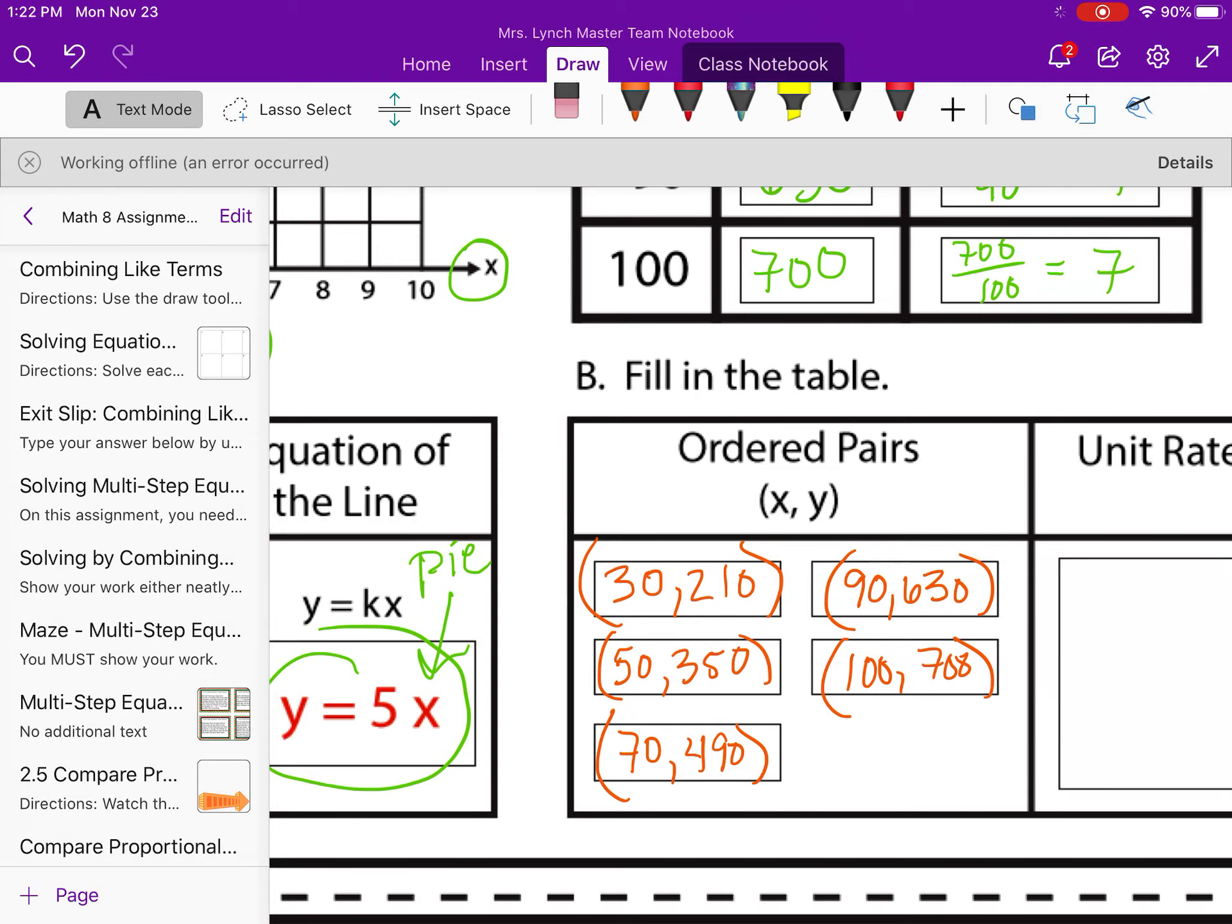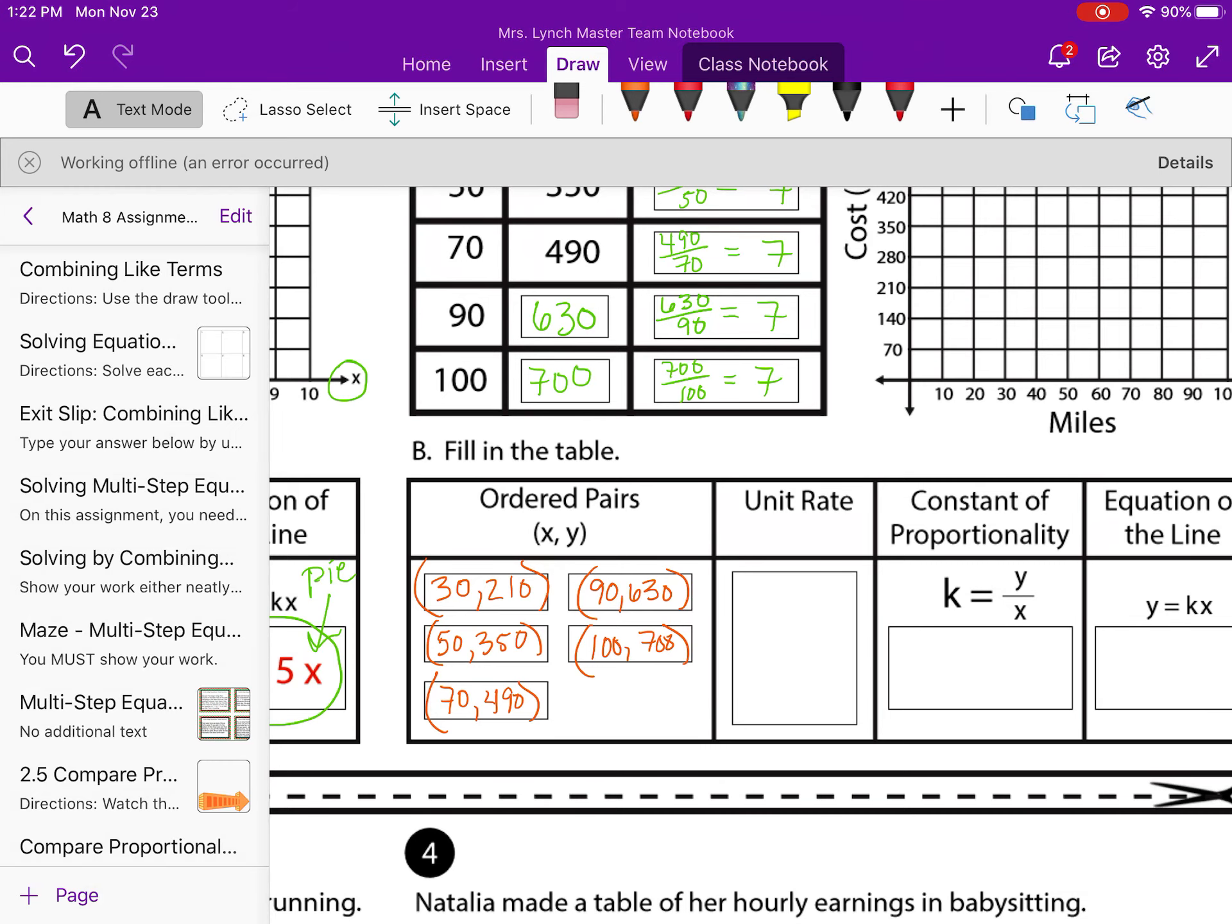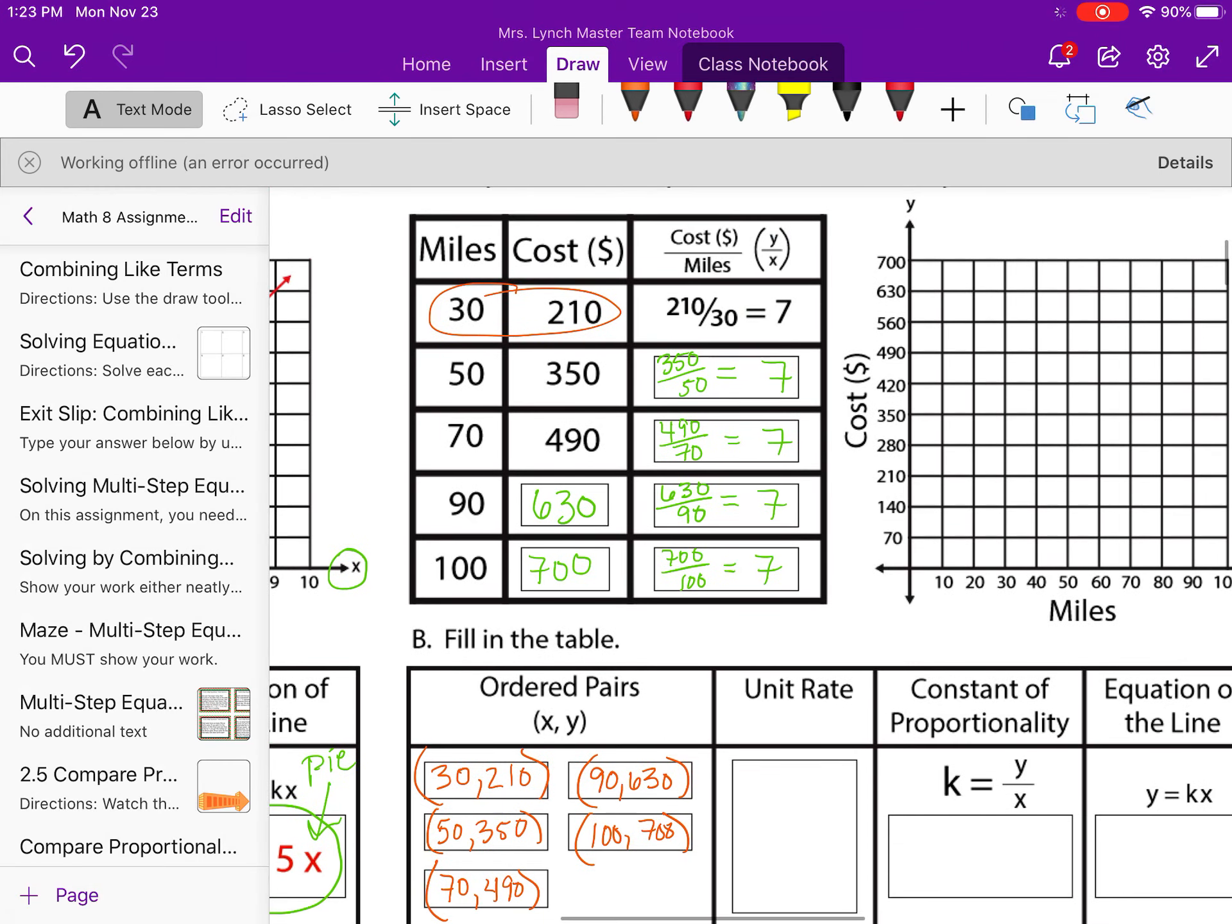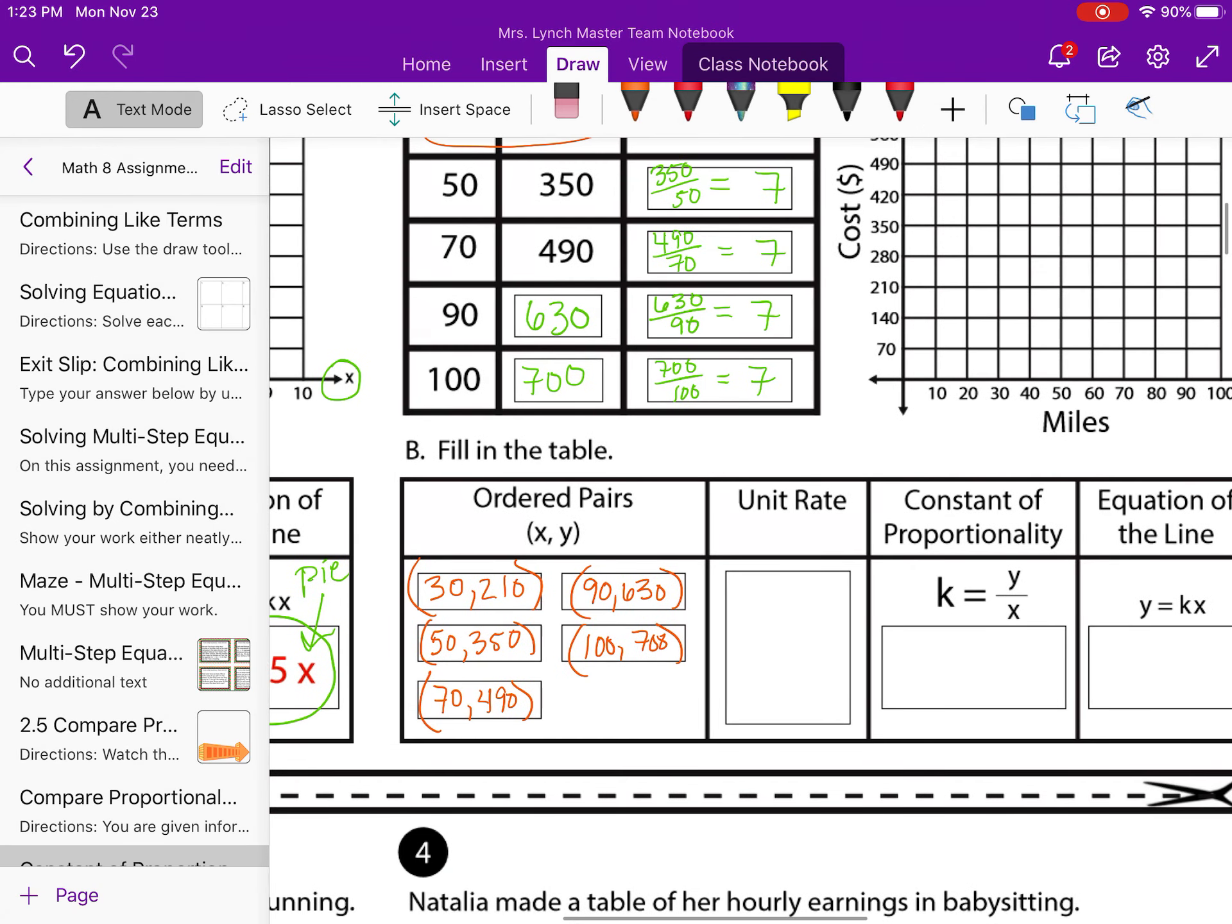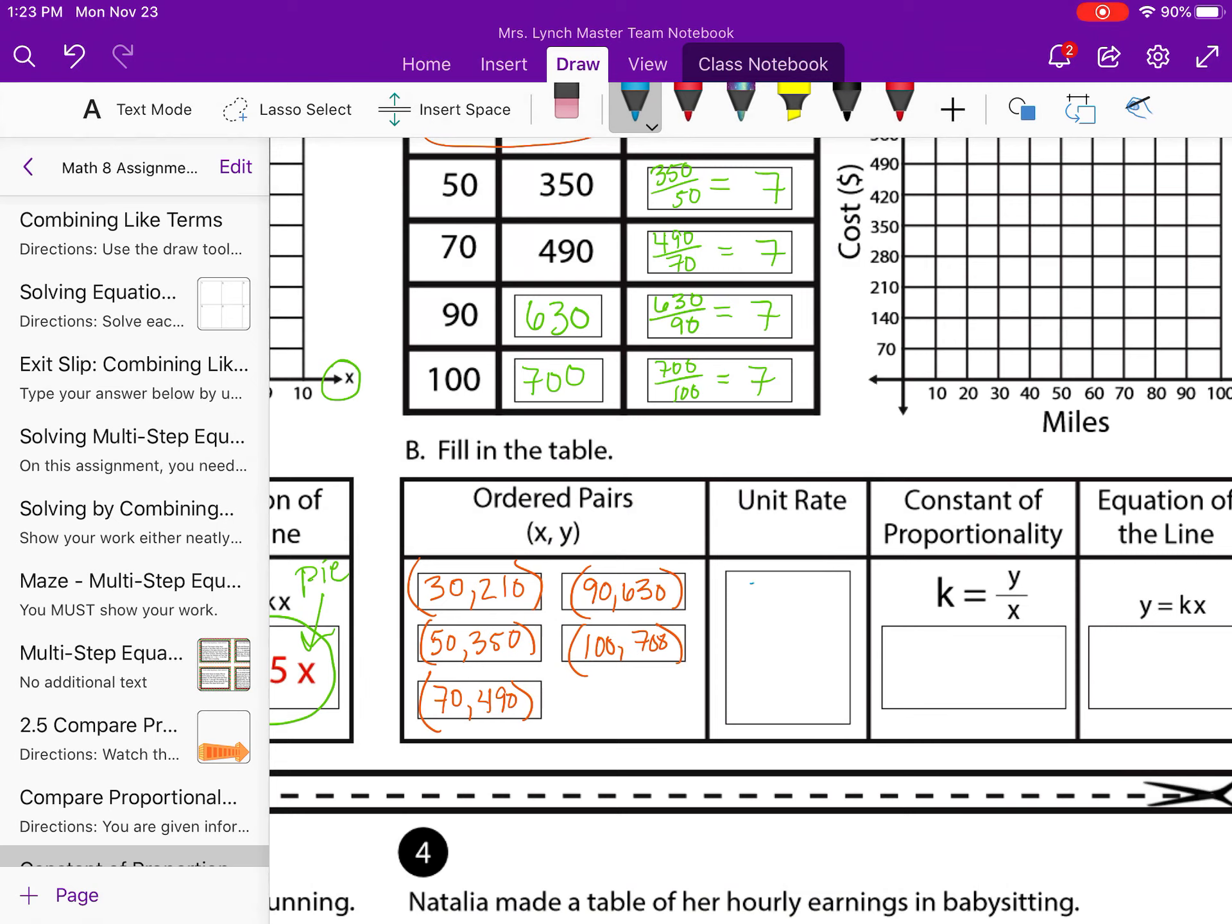Okay, those coordinates, these ordered pairs that we just wrote, those are going to help us when it comes to the graph. Let's fill in a couple of these things first, and then we'll go to the graph. So the unit rate, when we kept dividing by 7, what we figured out, that 7 that we kept getting, is called the constant. So what that means, we're talking about miles and cost. So that means it costs $7 per mile. Again, we already did the division up top to find the constant. So the constant, which we'll call K, is 7.